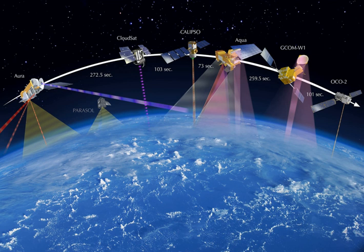A weather satellite is a type of satellite that is primarily used to monitor the weather and climate of the Earth. These meteorological satellites, however, see more than clouds and cloud systems. City lights, fires, effects of pollution, auroras, sand and dust storms, snow cover, ice mapping, boundaries of ocean currents, and energy flows are other types of environmental information collected using weather satellites.